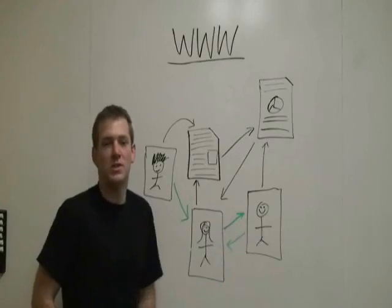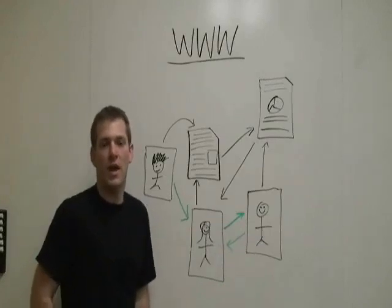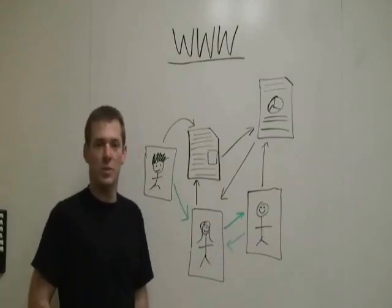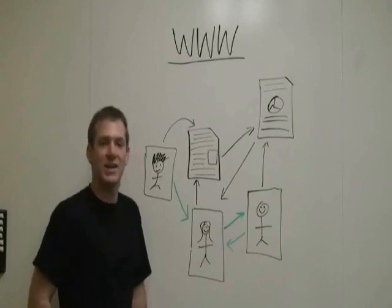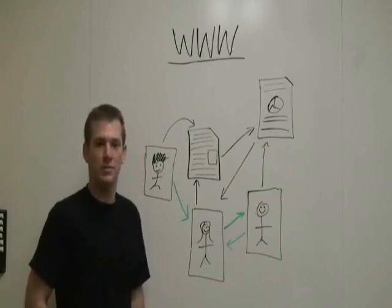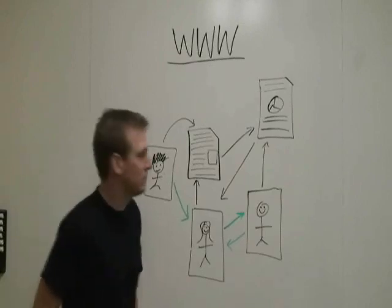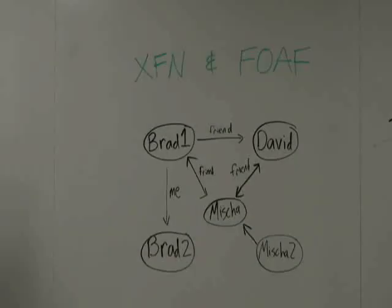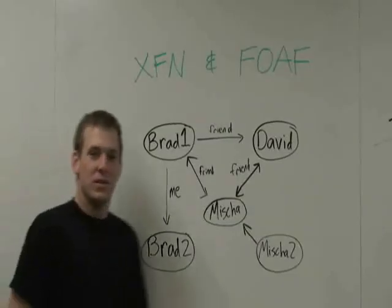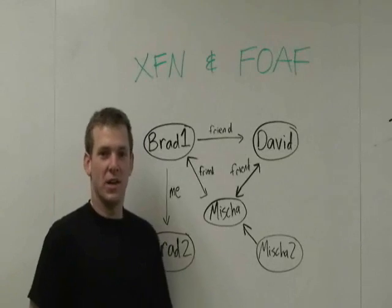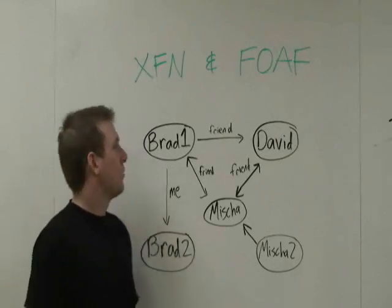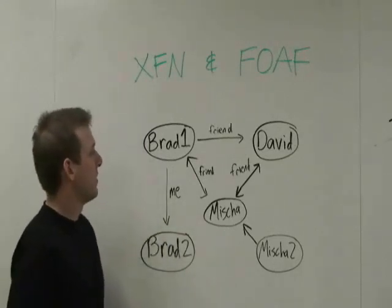There's basically all this information already there, and nothing's really consuming it. But with all the social applications getting popular lately, there's demand to access this Social Graph. And that's why we built the Social Graph API. Let's take a look. So once we throw away all the other documents on the web that don't have these annotated links, what we're left with is just all the XFN and FOAF.